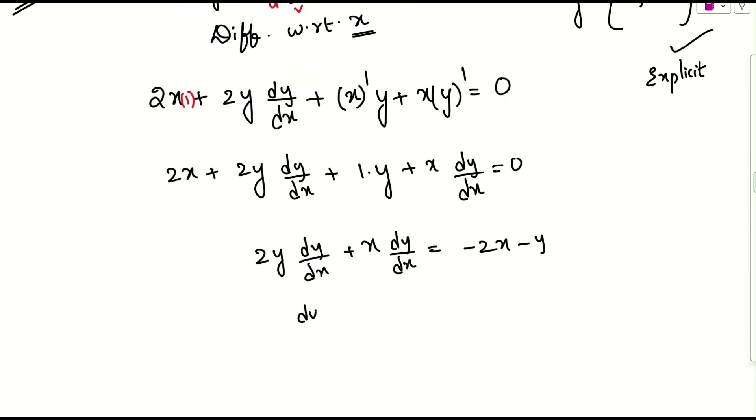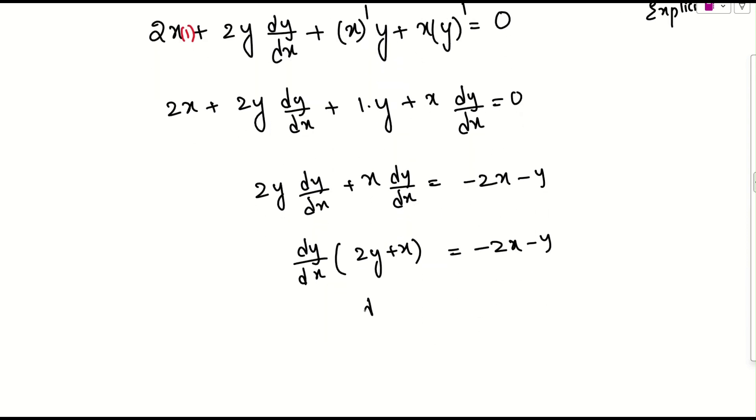So, what I can do? Simply, I can take dy by dx common, we will be getting 2y plus x, which is nothing but minus 2x minus y. See, I can take dy by dx, try to send the coefficient to the other side and right side take minus common, which is 2x plus y. If I send the coefficient, this is 2y plus x. This is our final answer. If you have any doubt, you just let me know.